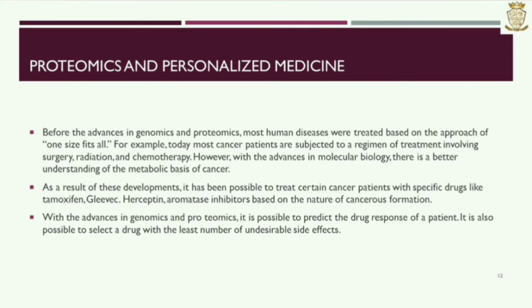Proteomics and Personalized Medicine. Before the advances in genomics and proteomics, most human diseases were treated based on the approach of one-size-fits-all. For example, most cancer patients were subjected to a regimen of treatment involving surgery, radiation, and chemotherapy. However, with the advances in molecular biology, there is a better understanding of the metabolic basis of cancer. As a result, it has been possible to treat certain cancer patients with specific drugs like Tamoxifen, Gleevec, Herceptin, and Aromatase Inhibitors, based on the nature of the cancerous formation.